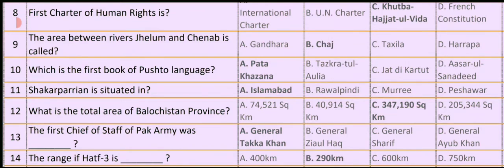Question No. 10. Which is the first book of the Pashto language? Option A. Pattah Khazana Option B. Tazkaratul Auliyah Option C. Jatdi Kartut Option D. Israrul Sanadid. So the correct option is Option A. Pattah Khazana is the first book of Pashto language.